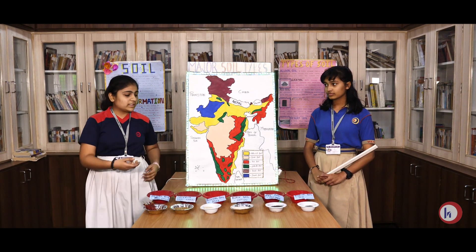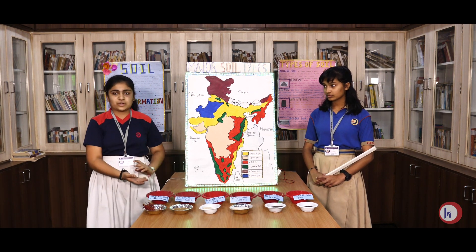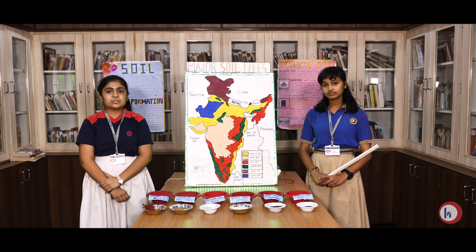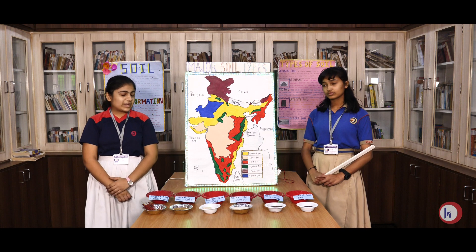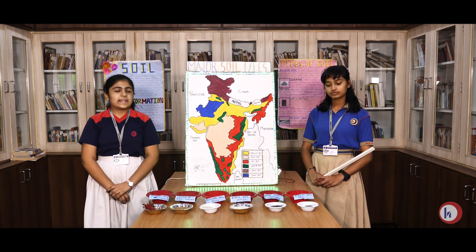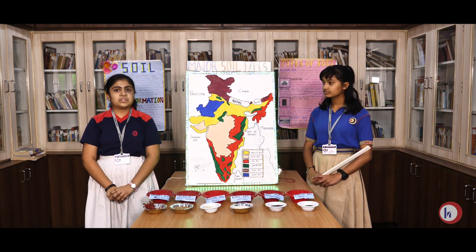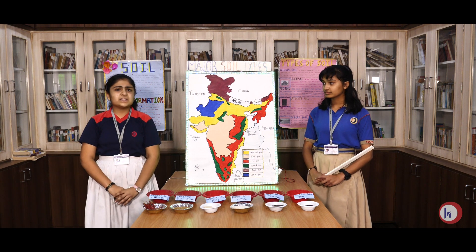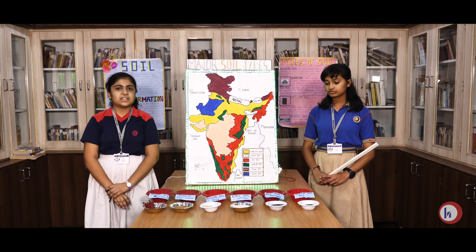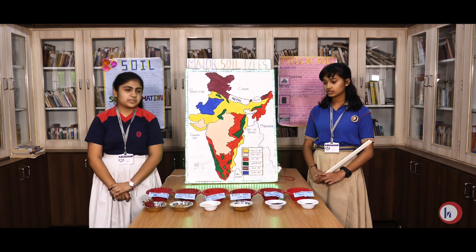Soil is formed by the lamination of the rocks. The rock surface erodes due to factors like temperature, air, snow, etc., and it turns into a powdery form. Then the biotic matter, air, and water are mixed with it. Thus, the soil is formed.